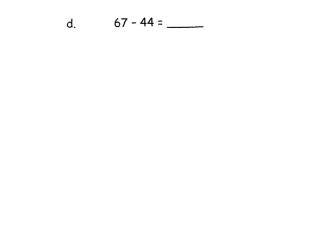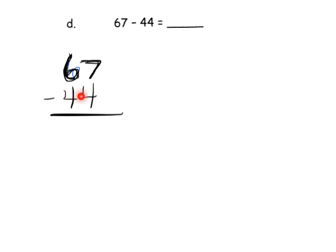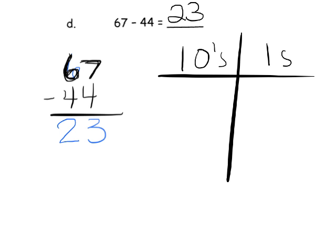This is a cool one. We're going to write 67 minus 44 vertically. Now if we look at this closely — do we have to unbundle in order to subtract the 1s? Nope, because it says to take away 4 and we have 7. Do we have to unbundle the 10s? No — it says take away 4 and we have 6. So it turns out we don't need to unbundle anything. 7 take away 4 is 3, and 6 take away 4 is 2. Nothing needs unbundling — we are done. I'm going to skip modeling that one on the place value chart.